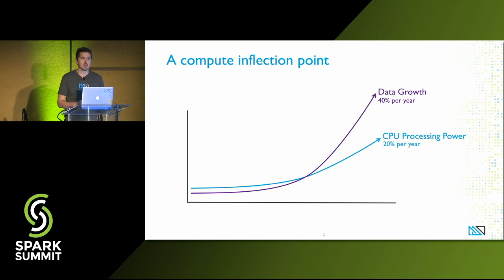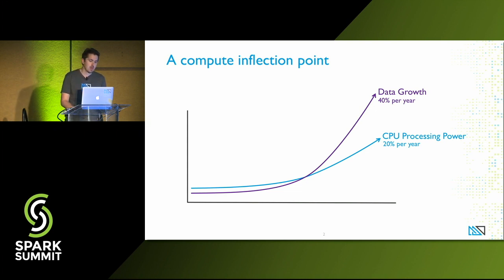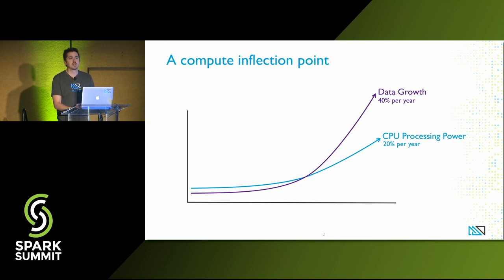That compute gap is causing people to take all sorts of awkward workarounds. People are downsampling heavily, which can be problematic in many cases, particularly when you're concerned about outliers or long-tail events. People are pre-aggregating data, and we all know the problems with that. And people are scaling out to massive clusters, which is fine, but big clusters cost a tremendous amount of money, require a lot of administrative resources, and certainly some problems just simply don't scale.